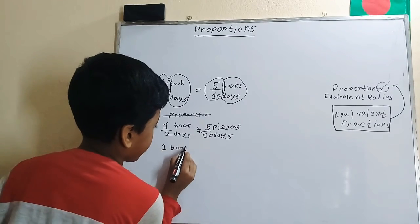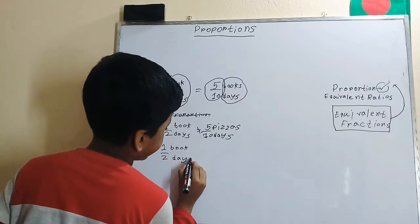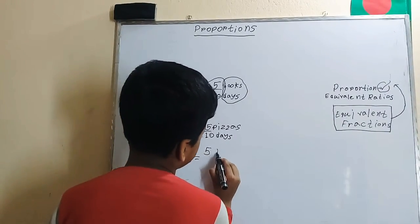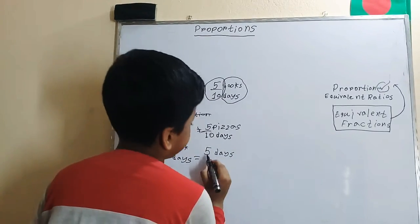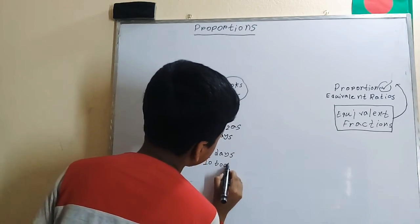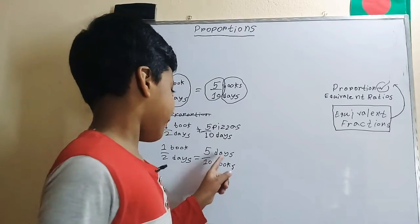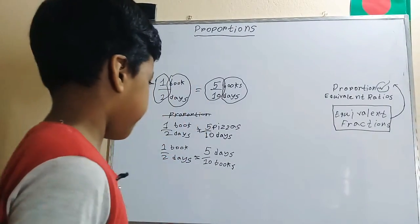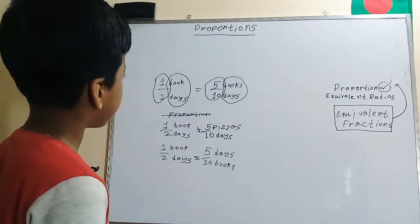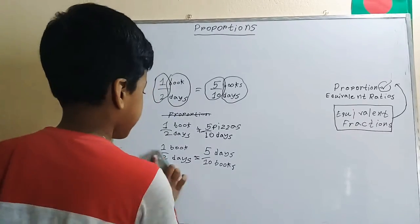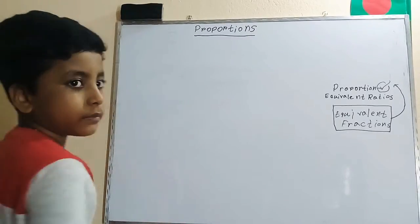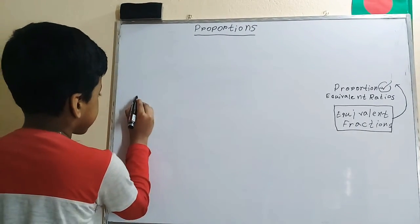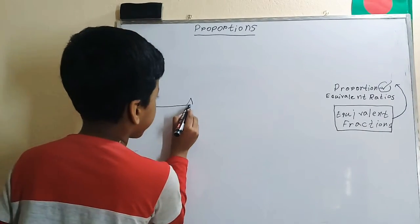And this is going to be inaccurate also if we change another thing. That is, one book over two days, same units as before. But if we switch them—we'll have five days over ten books—is this a proportion? Well, five days over ten books is not equivalent to one book over two days. It's not a proportion either.